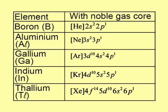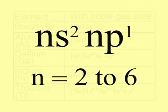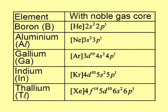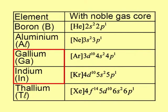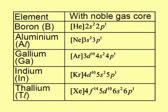The general outer electronic configuration of group 13 elements is ns2, np1, where n may be 2 to 6. Boron and aluminium have noble gas core. Gallium and indium have noble gas core plus 10 d electrons. Thallium has noble gas core plus 14 f electrons plus 10 d electrons. This difference in electronic configuration affects the properties and chemistry of all elements of this group.